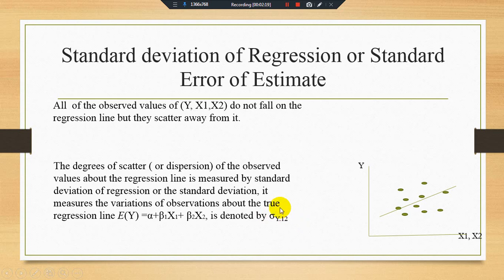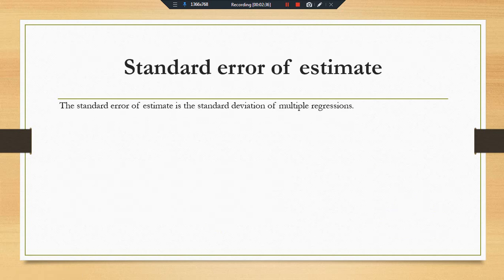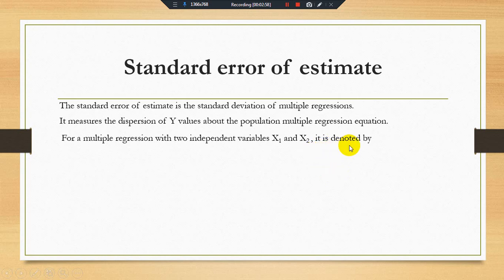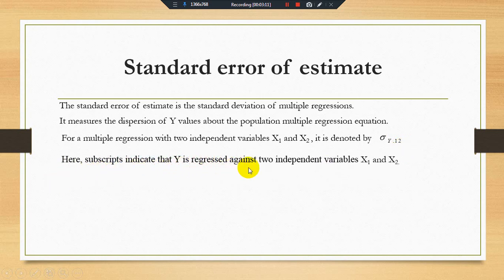Keep in mind we are discussing the population case. For the population case we write sigma y·12, where in the subscript y is the dependent variable and 1, 2 are the independent variables x1 and x2. The standard error of estimate is the standard deviation of multiple regression. It measures the dispersion of y values about the population multiple regression equation. For a multiple regression with two independent variables x1 and x2, it is denoted by sigma y·12, indicating that y is regressed against two independent variables x1 and x2.